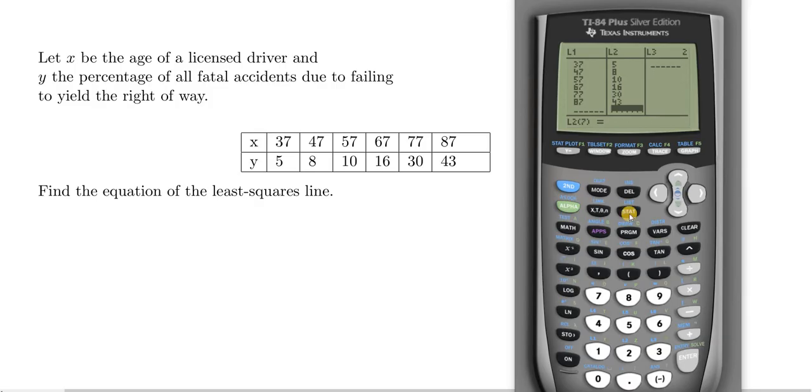Okay, so now we want to press stat again. We want to go to where it says calc. So you press stat and you go to calc. And you want to go to the one that says lin reg ax plus b. So go down to that one. And then just press enter. And then press enter again.